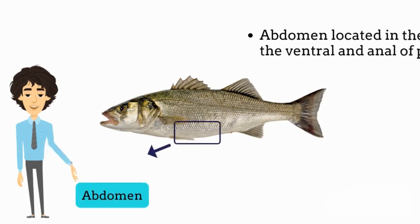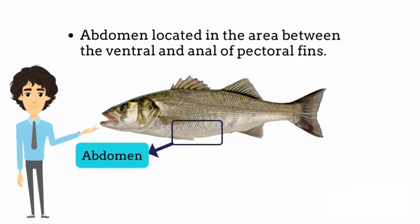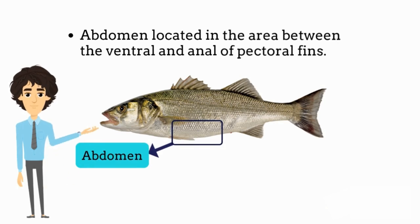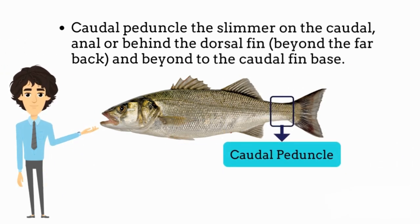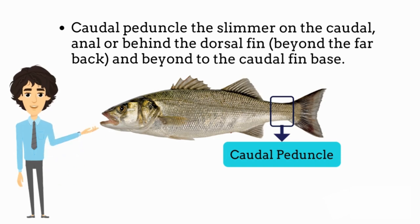Abdomen: located in the area between the ventral and anal of the pectoral fins. Caudal peduncle: the slimmer part on the caudal, anal, or behind the dorsal fin, extending to the far back and beyond to the caudal fin base.